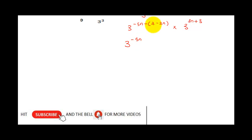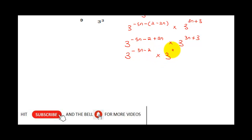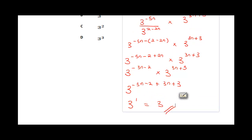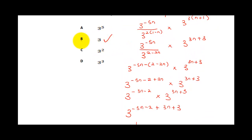Applying the division rule: minus 5n minus (2 minus 2n) gives minus 5n minus 2 plus 2n, which is minus 3n minus 2. Then multiplying by 3 raised to the power (3n plus 3): we add the exponents — minus 3n plus 3n is 0, and minus 2 plus 3 is 1 — giving 3 raised to the power 1, which equals 3. The correct answer is B.